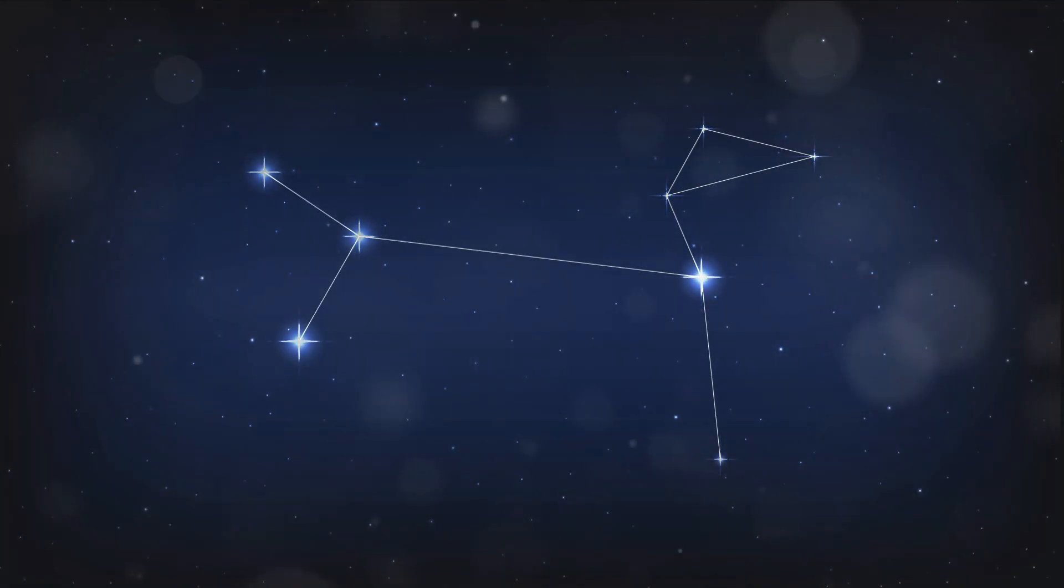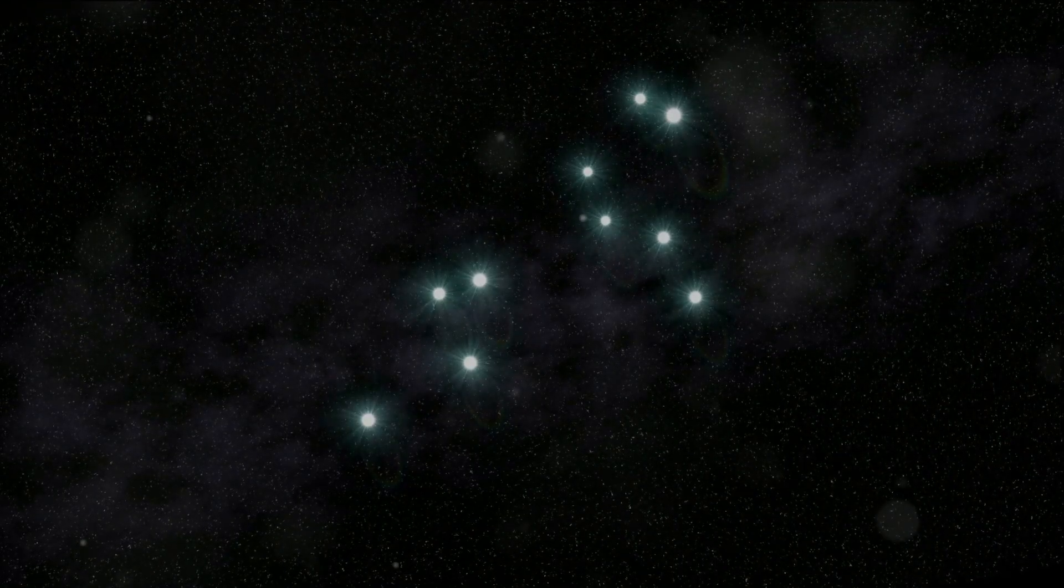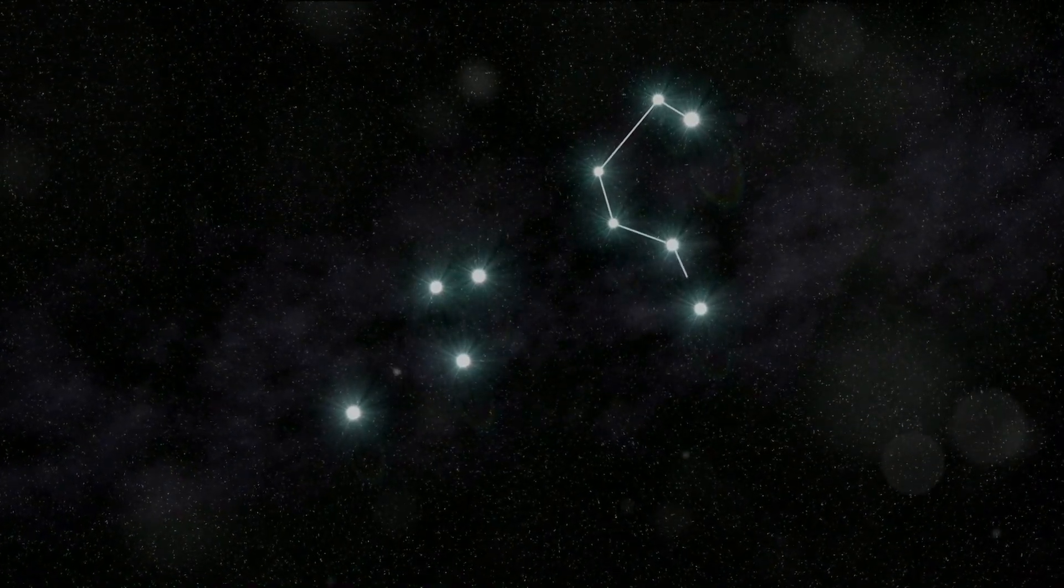Cassiopeia, the queen sitting on her throne is our next stop. This constellation is shaped like a W or M, and it's named after a vain queen in Greek mythology who boasted about her unrivaled beauty.